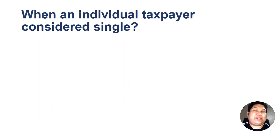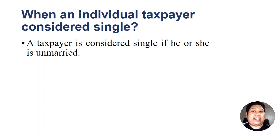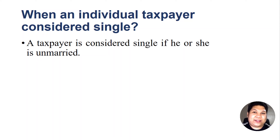When is an individual taxpayer considered single? A taxpayer is considered single if he or she is unmarried. So even if you have boyfriends or girlfriends, you are still considered single. Unless you are legally married, you are still considered a single individual taxpayer.